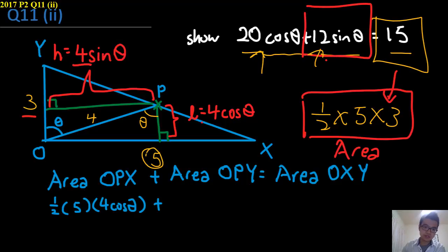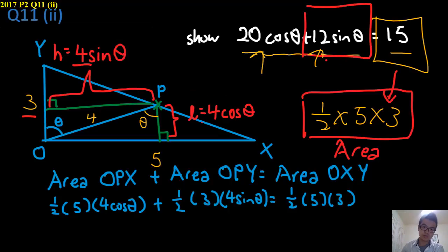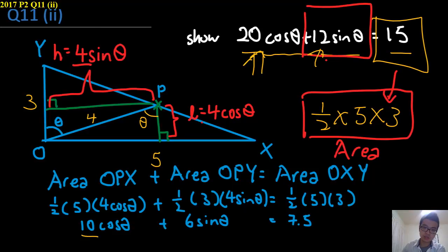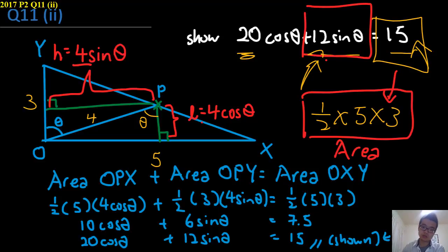We have half times 5 times 4 cosine theta, plus half times 3 times 4 sine theta, equals half times 5 times 3. So we simplify: here's 10, here's 20; here's 6, here's 12; and here's 7.5, here's 15. So just multiply by 2 to all these terms and you've got the answer shown.